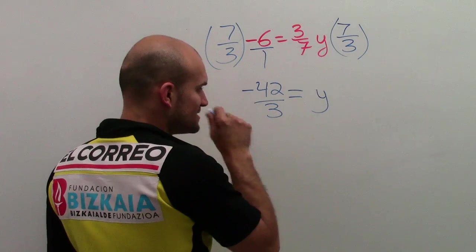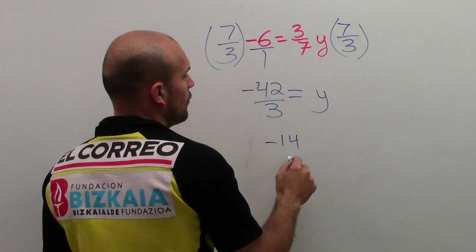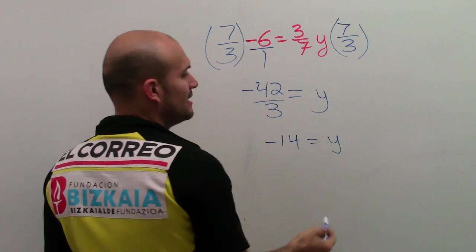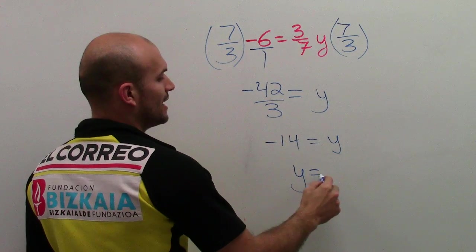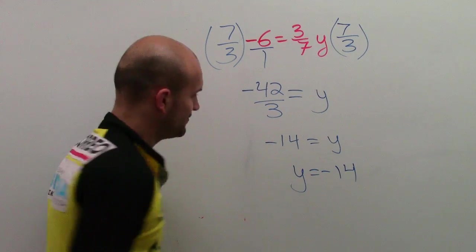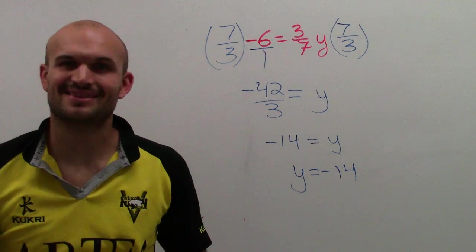And therefore, you can say that is negative 14 equals y. And we just like to rewrite this as y equals negative 14. And there you go. Thanks.